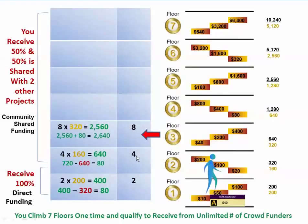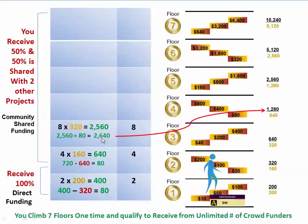When these four project managers each find two each, you potentially now have eight project managers on your third generation. When these eight project managers step up to their third floor and make a donation, you receive 50% of what the third floor is, which is $320 — times eight is $2,560 potential. When you add the extra $80 carried over, you have $2,640 towards your project. When you share and step up and share forward with the project four generations before you, you share $1,280 in steps: first $80, then $400, then $800. What you're left with towards your project is $1,360 potential.